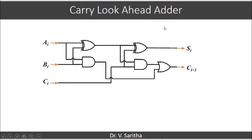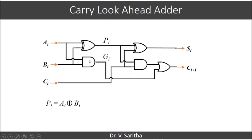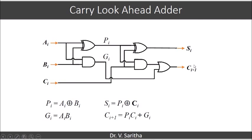Once we make all full adders independent of each other, outputs can be generated at the same time. This can be done using a carry lookahead generator. The full adder circuit uses two half adders with inputs Ai, Bi, Ci and outputs Si and Ci+1. We define Pi (carry propagate) as Pi = Ai XOR Bi and Gi (carry generate) as Gi = Ai AND Bi. Then Si = Pi XOR Ci and Ci+1 = Pi·Ci + Gi.